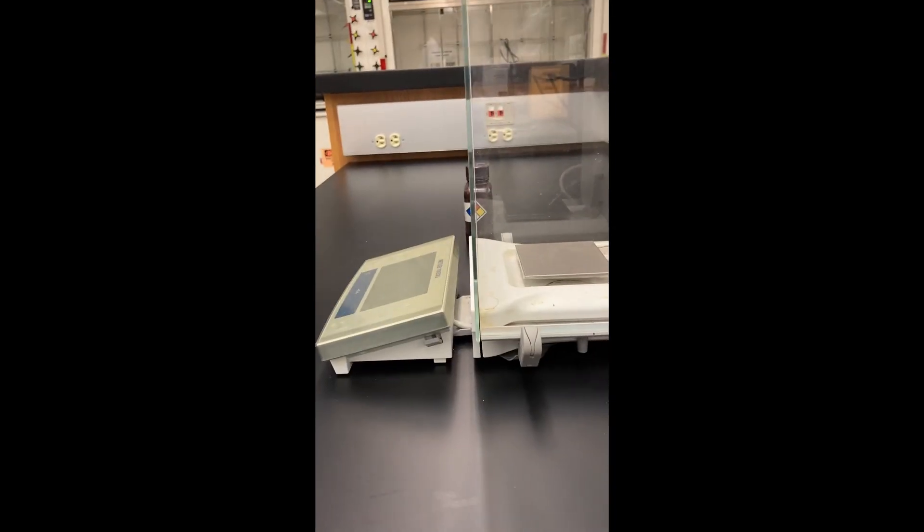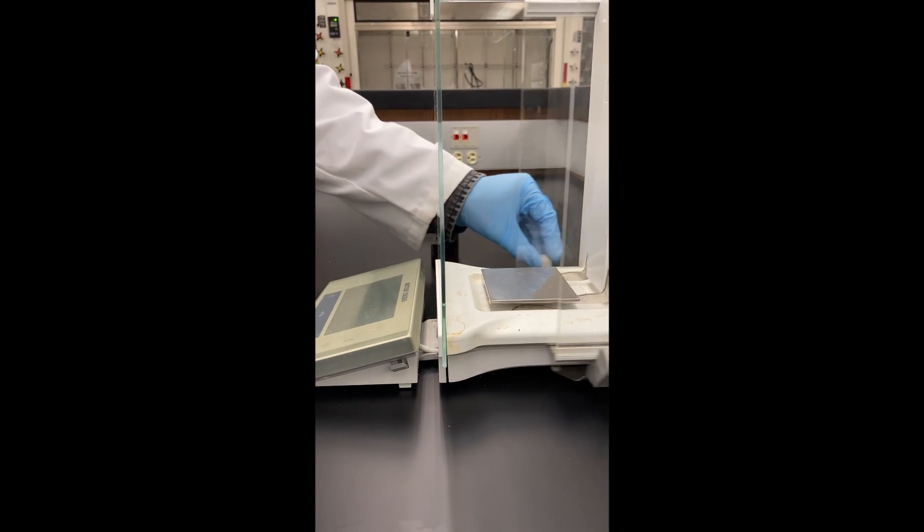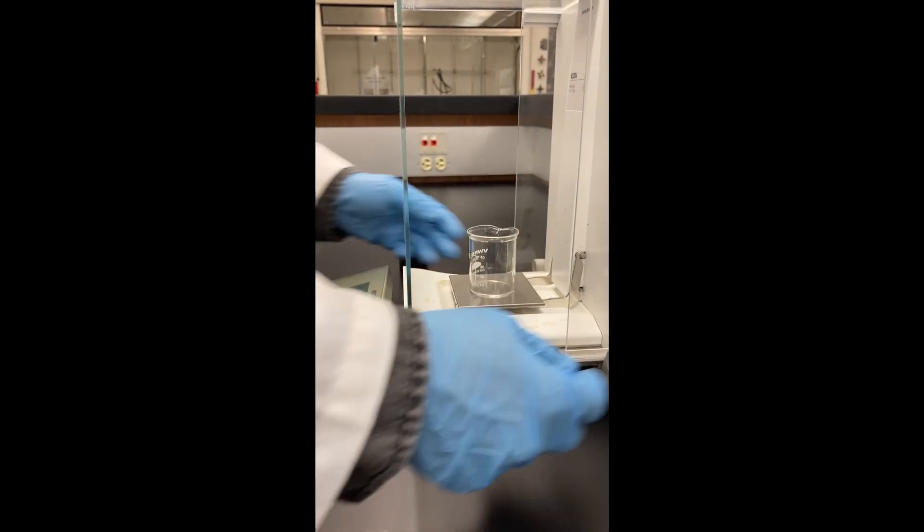Before you transfer your hexane layers to the 50 milliliter beaker, make sure you record the mass of it on a scale.